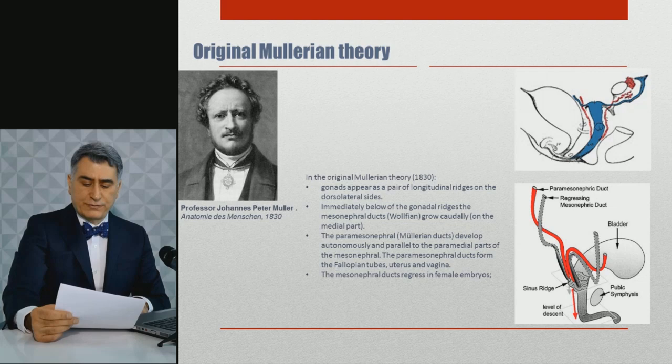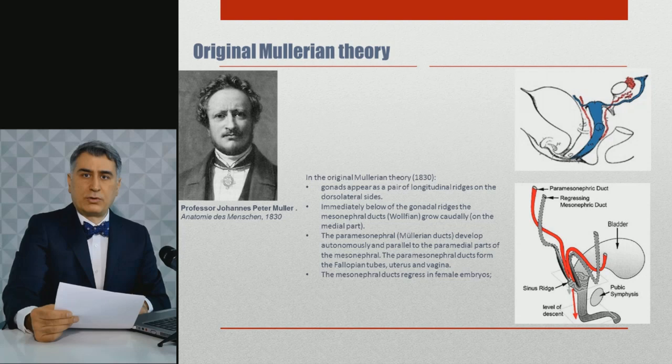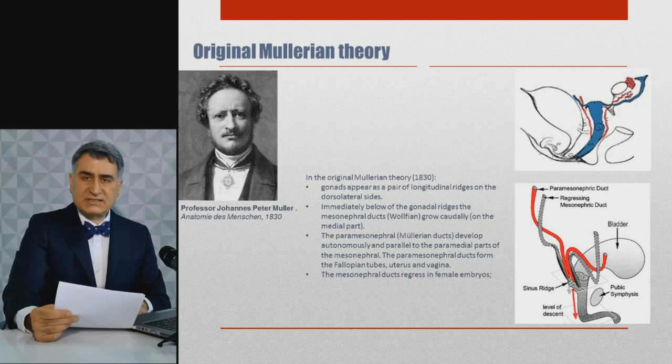Professor Johannes Peter Müller described the early stages of human embryo development by simple light microscopy in the beginning of the 19th century. His research improved our understanding of anatomy, physiology, and particularly increased understanding of the reproductive system's development. In the original Müllerian theory, the mesonephral ducts, or so-called Wolffian ducts, grow caudally just below the gonadal ridges, while the paramesonephral ducts, or so-called Müllerian ducts, grow autonomously parallel to the mesonephral ducts.